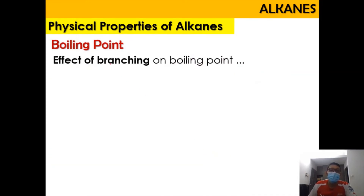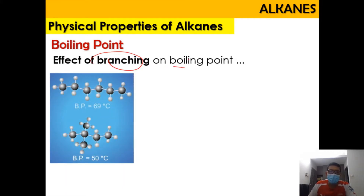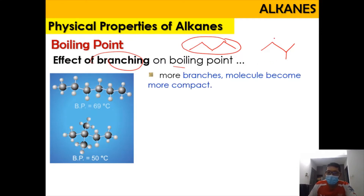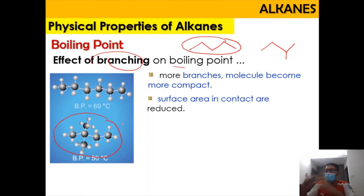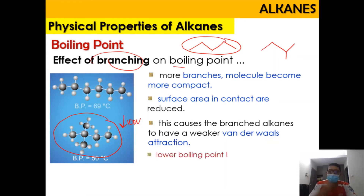Now let's look at the effect of branching on boiling point. A straight-chain alkane — for example, pentane (5 carbons) — will have a higher boiling point compared to a branched alkane with the same number of carbons. This is because when there is more branching, the molecule becomes more compact. Hence, the surface area in contact with neighboring molecules is reduced, causing weaker van der Waals forces. With weaker forces, less energy is required to break them, resulting in a lower boiling point.